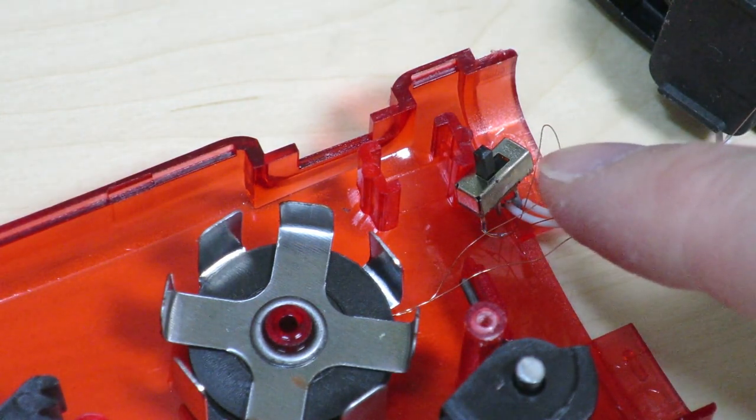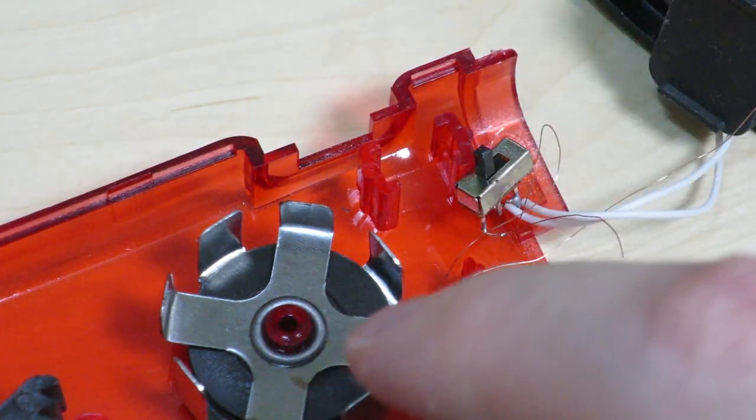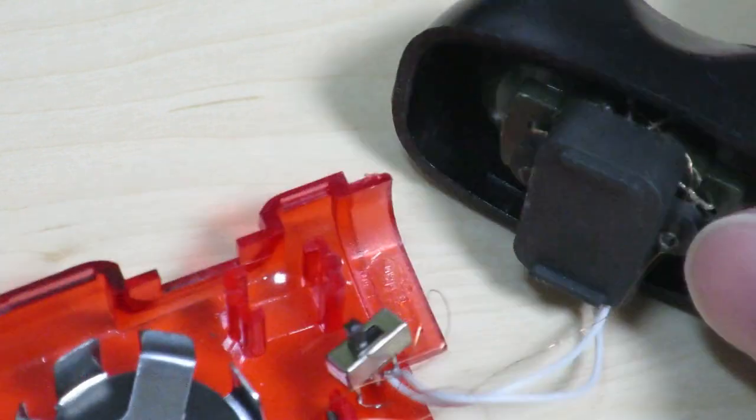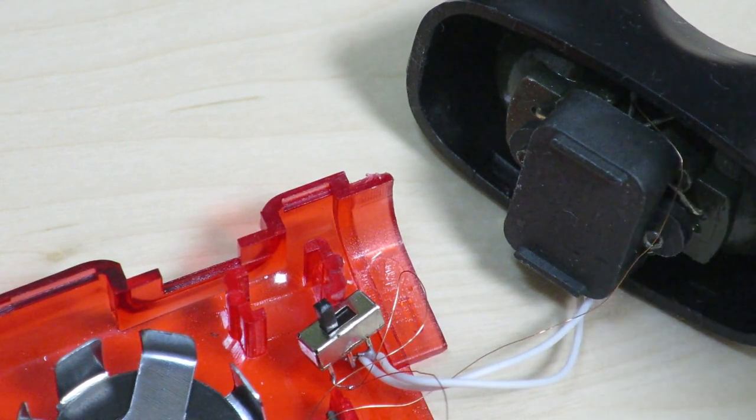So basically, it seems like this switch switches between using the hand crank generator or the battery that's within this LED module. So maybe we'll take a look at this next.